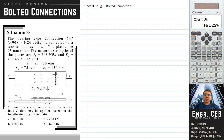The bearing type connection is subjected to a tensile load as shown. The plates are 25 mm thick. The material strength of the plates are 248 MPa and F sub U equals 400 MPa. Use ASD. Find the maximum value of the tensile load T that may be applied based on the tensile yielding of the plate.